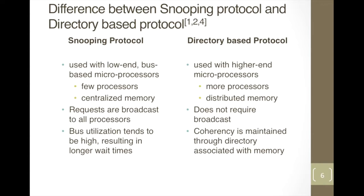Snooping protocol is used in a system with few microprocessors and centralized memory, whereas directory-based protocol is used in systems with a large number of microprocessors and distributed memory. Snooping protocol requires broadcast, while directory-based does not use broadcast. In snooping protocol, bus utilization can cause longer wait times.